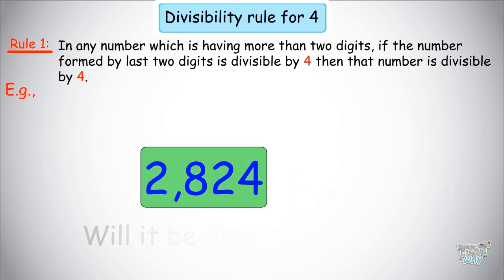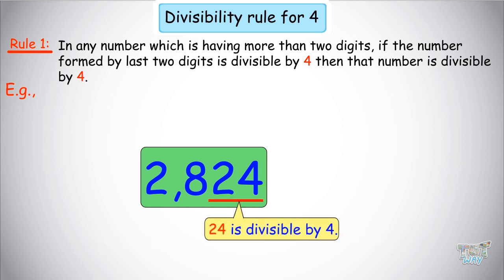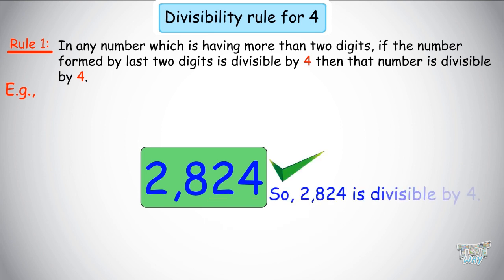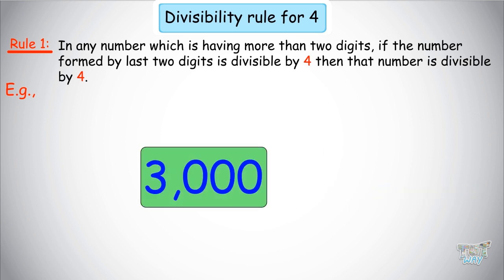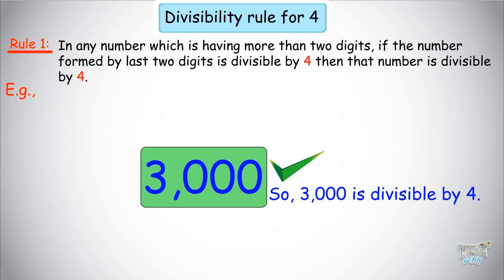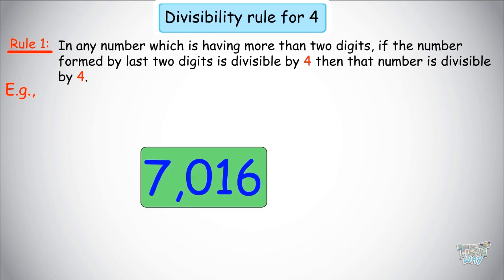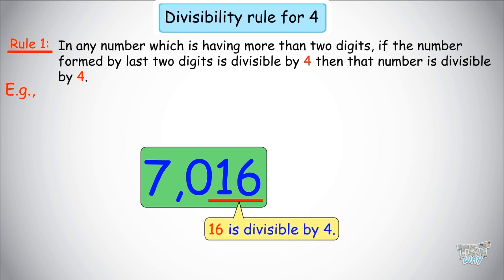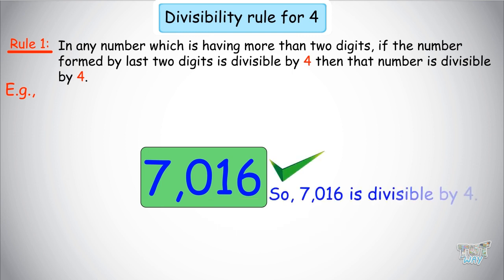2824 — is this divisible by 4? The last 2 digits form 24, and 24 is divisible by 4, so this number is divisible by 4. The next number is 3000 — the last 2 digits form 00, and 0 divided by 4 is 0, so 0 is divisible by 4, and therefore 3000 is also divisible by 4. The next number is 7016 — the last 2 digits form 16, and 16 is divisible by 4, so this number is also divisible by 4.